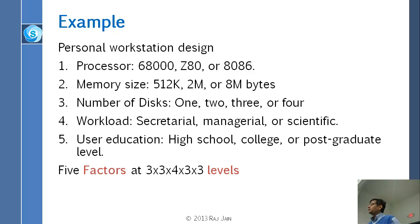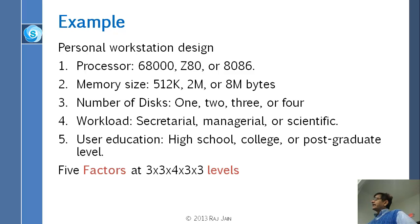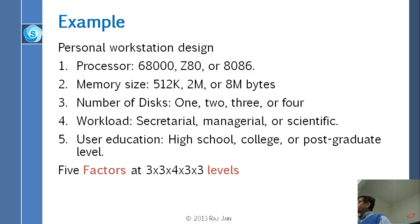One possibility would be to do every possible combination. There are two terms already used in this example: factor and level. We have five factors here, and each factor has some number of levels — this factor has three levels, this factor has four levels, this factor has three, and so on. We will use those two terms continuously in this whole part. So we have five factors at three, three, three, four, three levels — if you multiply that, you get 81 times 4, which is 324 experiments.